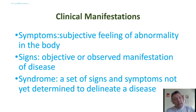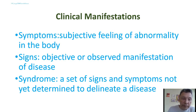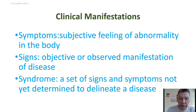Clinical manifestations are divided into symptoms, signs, and syndromes. Symptoms are the subjective feelings of abnormality of the body. Signs are objective, observed manifestations of disease. A syndrome is a set of signs and symptoms not yet determined to delineate a specific disease.